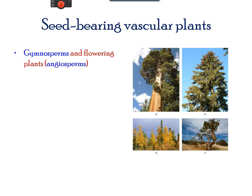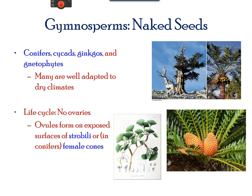The seed-bearing vascular plants are divided into major groups: gymnosperms that have open seeds and angiosperms with closed seeds. The gymnosperms were the first plants to colonize the land and resemble modern day plants. Gymnosperms are naked-seed plants, a diverse group that descends from a single common ancestor. They have separate female and male gametes and are pollinated by winds and insects.